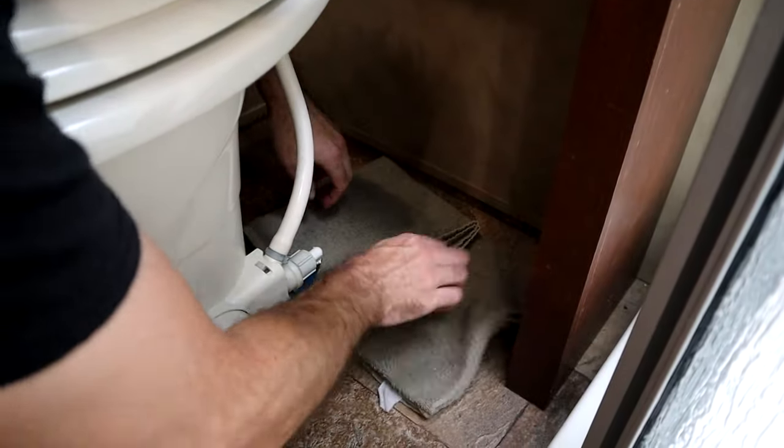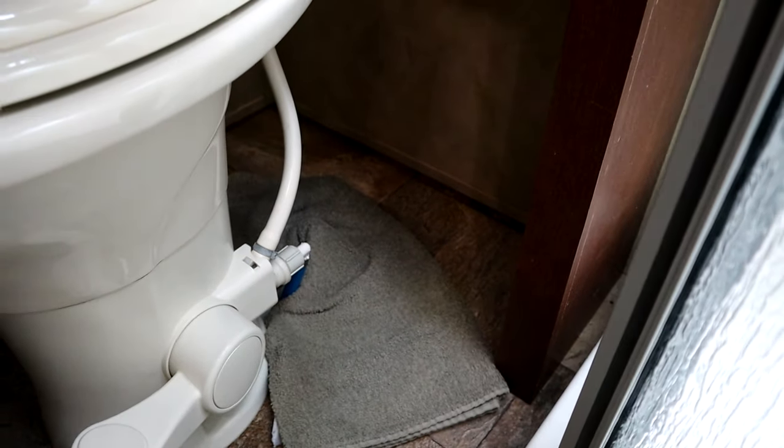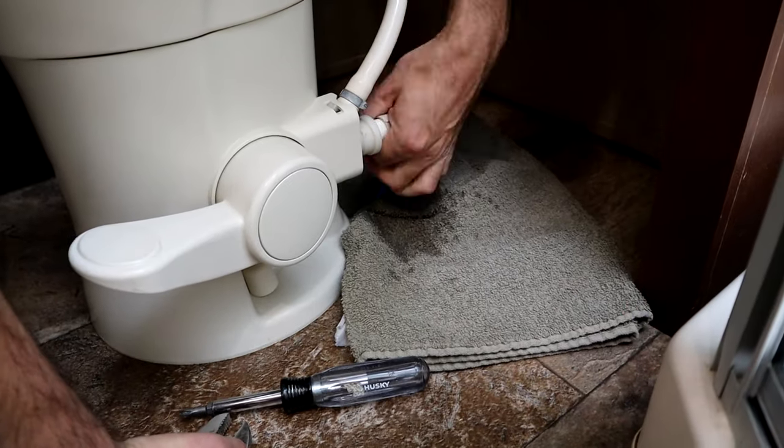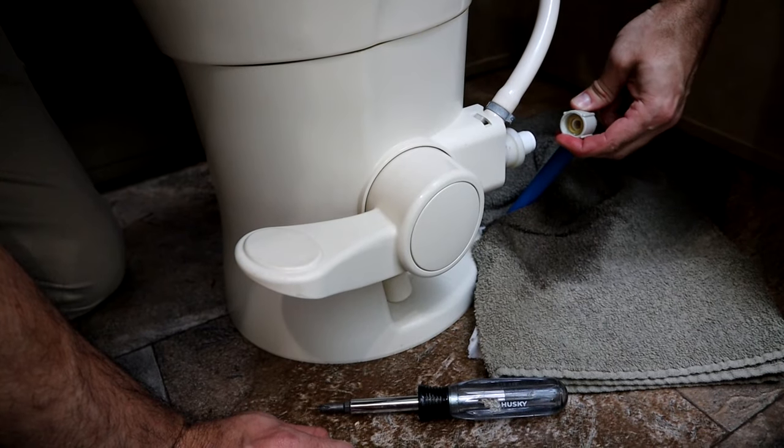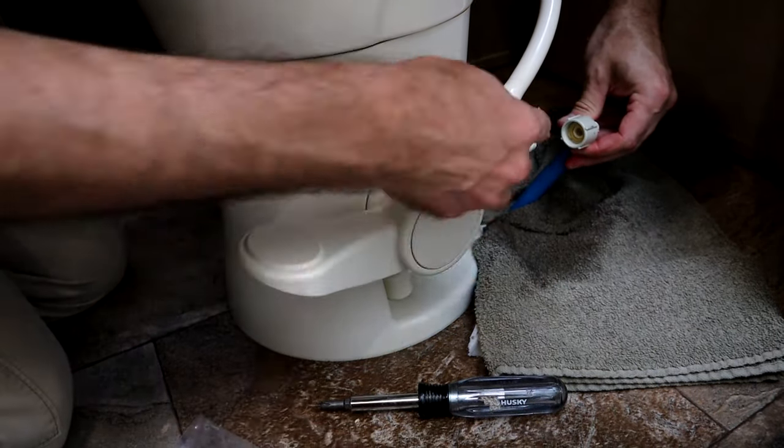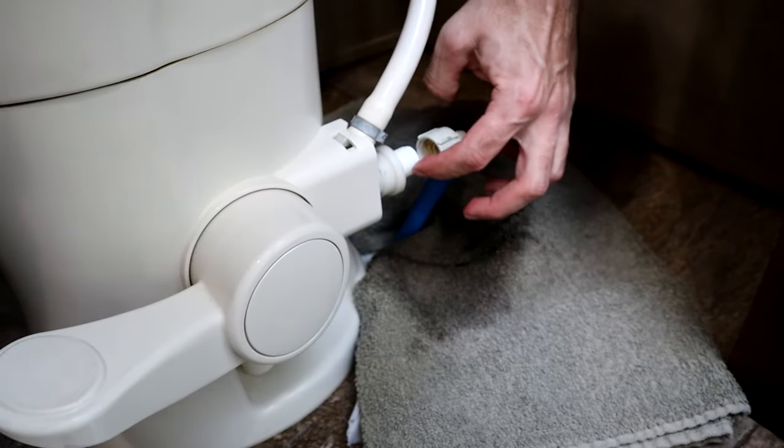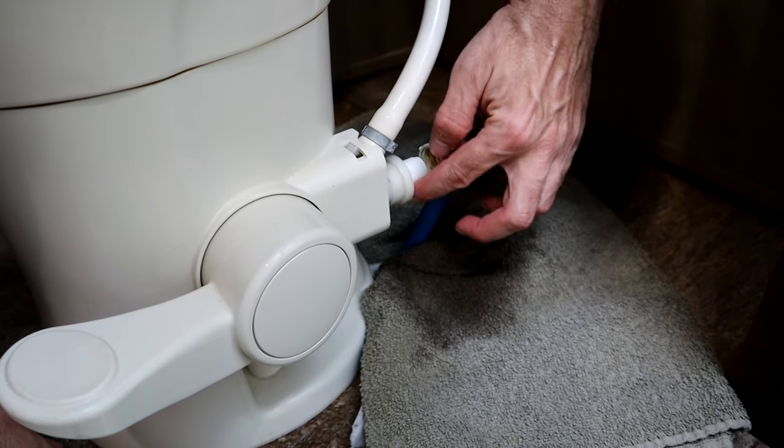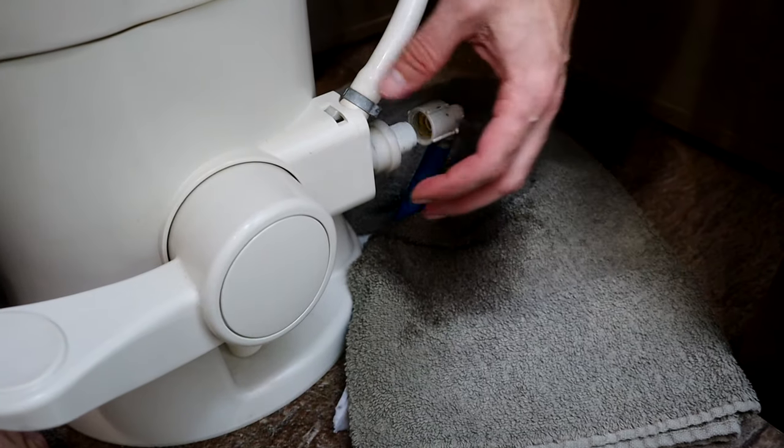So I always like to use a towel just in case, because you're always going to have a little bit of water left in the lines. A lot of people will have this valve, if this washer will go bad inside and you'll start leaking out of here. Or I've seen a couple of people that have cracks in the valve itself along the thread, so it leaks out of here. Either way, you have to replace the valve itself.